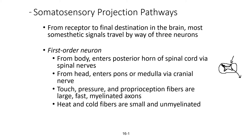Depending on what purpose the first order neuron has, you'll see differences in fiber size and level of myelination. For senses like touch, pressure, and proprioception, those fibers are going to be large, fast, and myelinated. The diameter of the axon and how heavily myelinated it is determine the speed at which action potentials are sent, so those senses travel quickly. Fibers specialized to sense temperature — the thermal receptors — are small and unmyelinated.